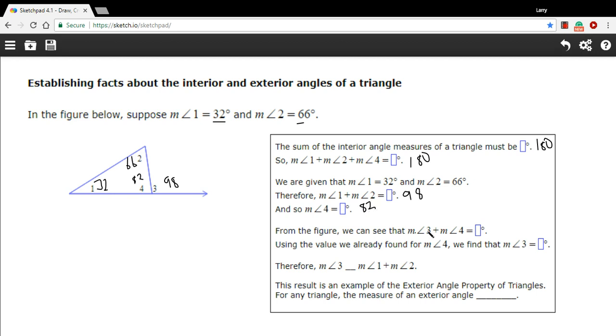From the figure, we can see that the measure of angle 3 plus the measure of angle 4, well, that's the linear pair here. So that's 180. Using the value we already found for the measure of angle 4, we find that the measure of angle 3 must be 98.